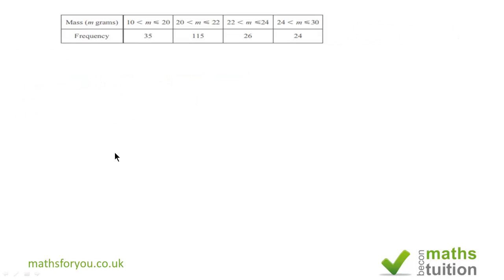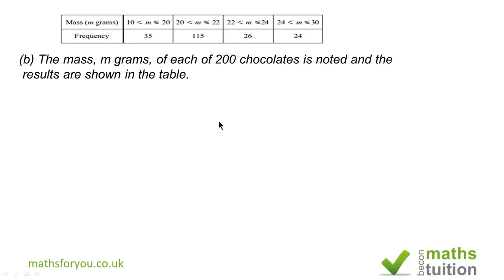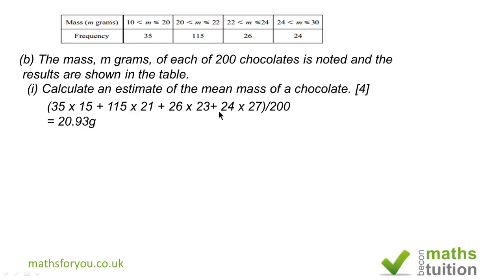Part B1: The interval for the mass is between 10 and 20, 20 and 22, and so on. So the mean interval for the first interval is 15, and the mean for the second interval is 21. The mean for the third interval is 23, and the mean for the fourth interval is 27.